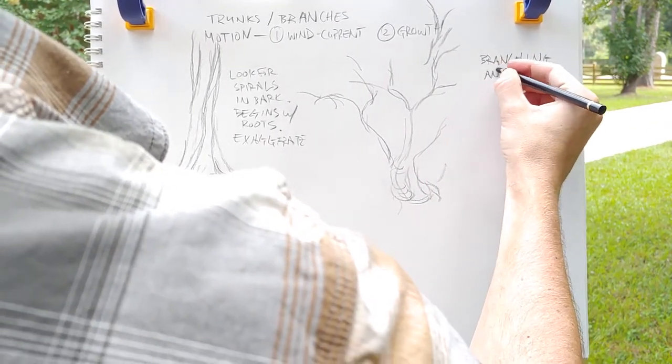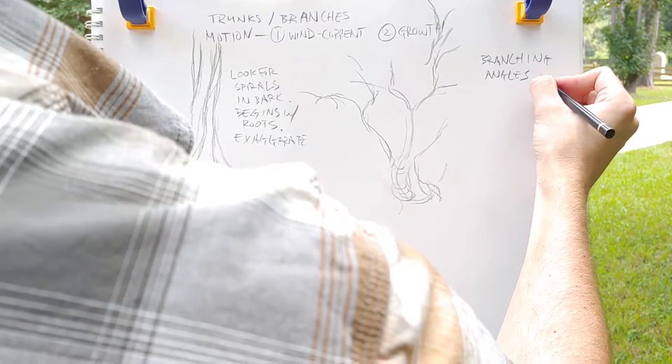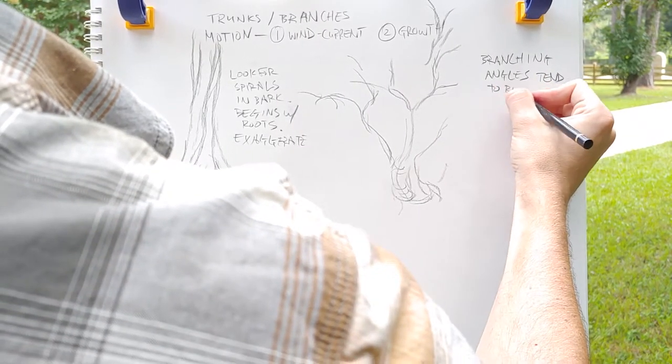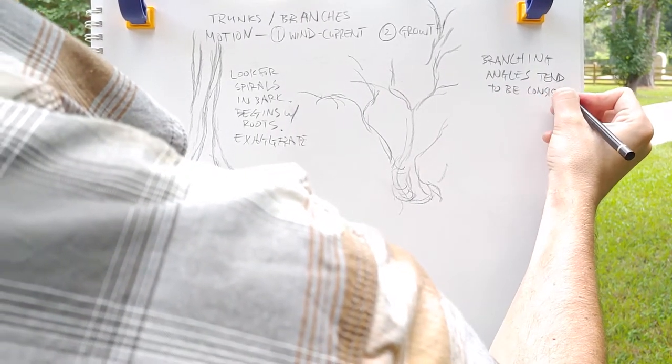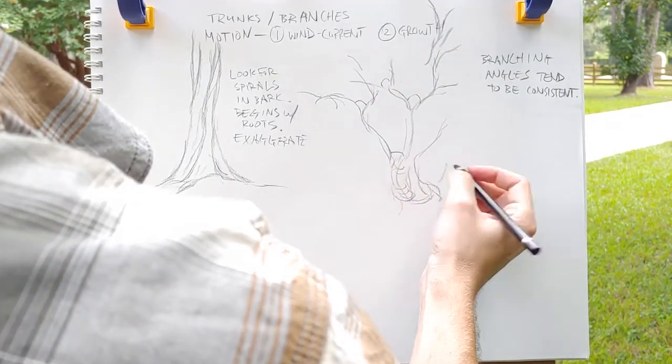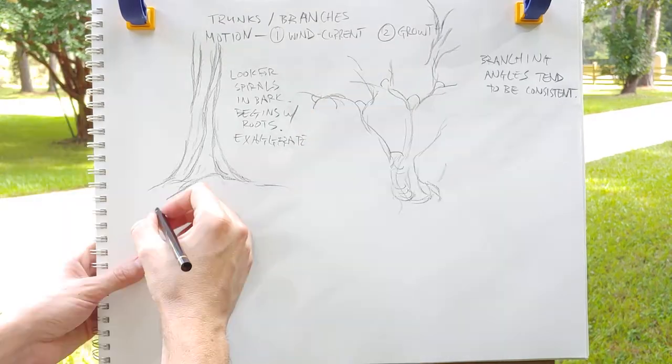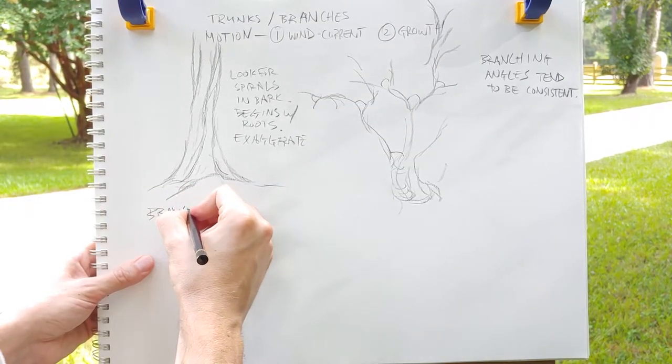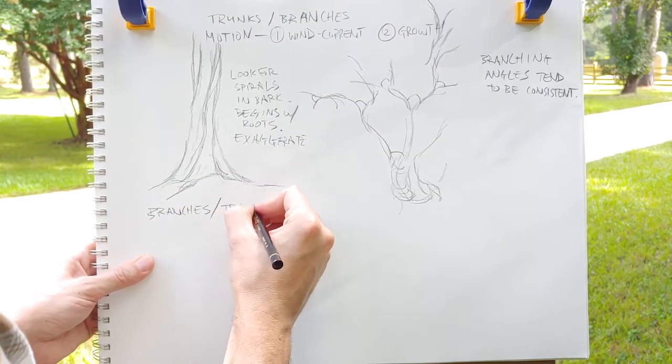One of the more interesting things is that the angle that a branch grows off tends to be very consistent from tree to tree. So when you look at a tree and you're analyzing it, you have kind of a fixed angle at all of the branchings. And that angle usually repeats in the leaves, in the veins and leaves as well.